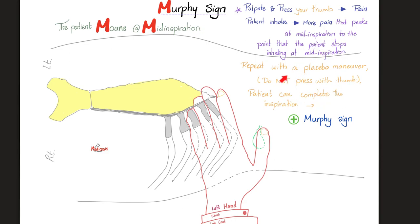Now I'm trying to get a negative test. Do not press your thumb — repeat the test. Ask: 'Take a deep breath for me.' The patient should now be able to complete and finish the inspiration. So when I press on the inflamed gallbladder, it hurts. But when I'm not pressing on it, it should not hurt.